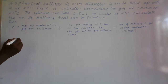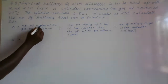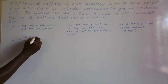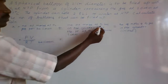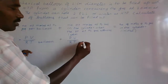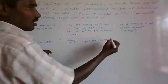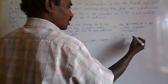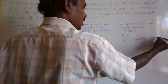Number of moles is nothing but PV by RT from the ideal gas equation. So: number of moles of hydrogen gas per balloon equals PV by RT for a balloon; number of moles of hydrogen gas in the cylinder when it attains one atmospheric pressure equals PV by RT; and number of moles of hydrogen gas in the cylinder initially also equals PV by RT.